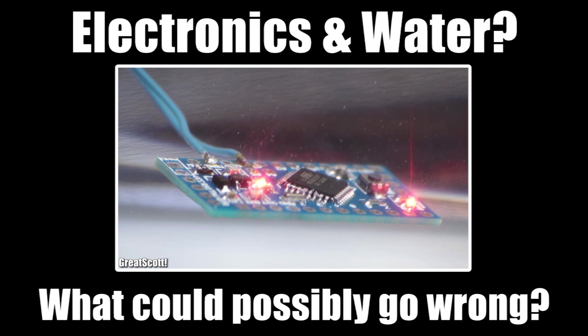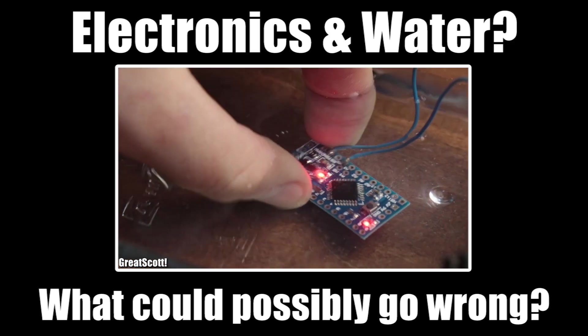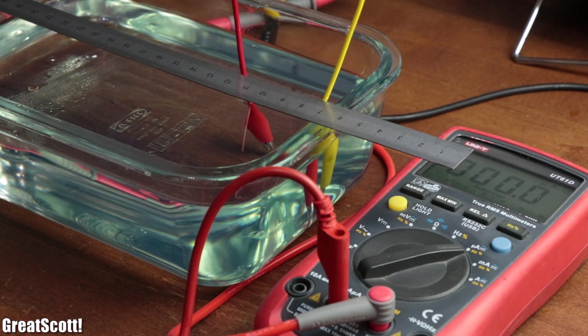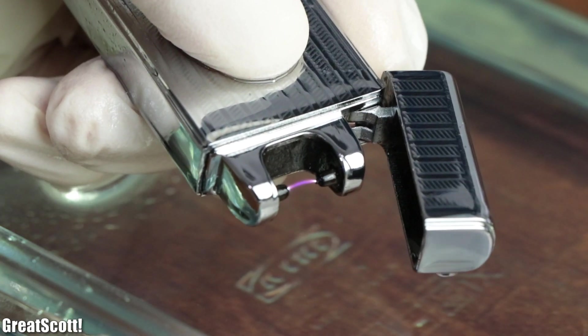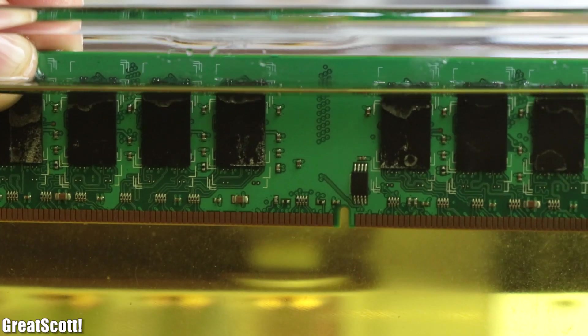But nevertheless, oil features some interesting properties when it comes to interacting with voltage potentials and electronics. So just like in a previous video in which I had a closer look at how tap water and distilled water collude with electronics, I will perform a couple of experiments in this video to find out whether oil and electronics are actually best buds. Let's get started.